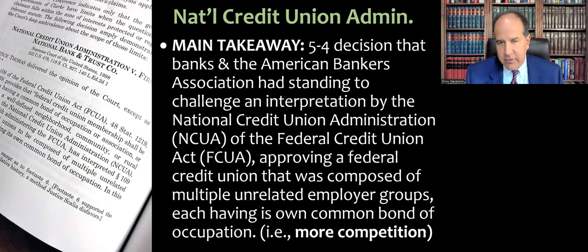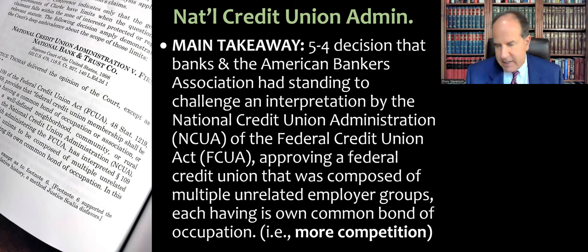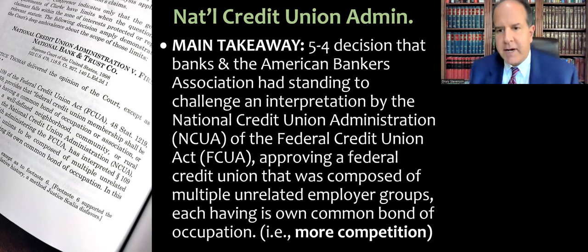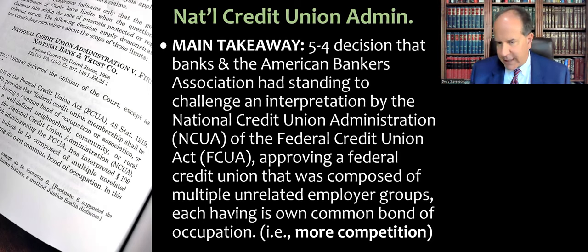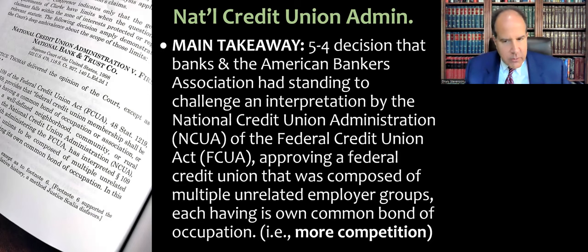This case splits on sort of party lines — conservatives versus liberals on the court at the time, but not the way some other standing cases do. Here the conservatives are in the majority, basically siding with the big banks and saying they have standing. The decision being challenged was the administration approving a federal credit union composed of multiple unrelated employer groups, each having its own common bond or occupation, which loosened the standards for getting a charter as a federal credit union.